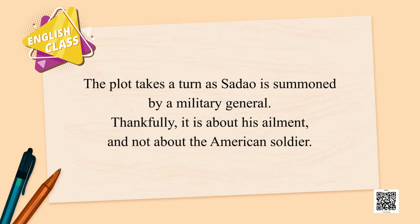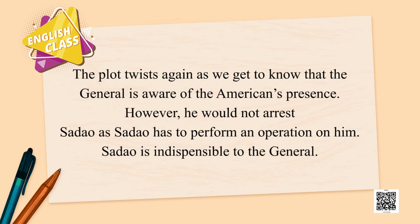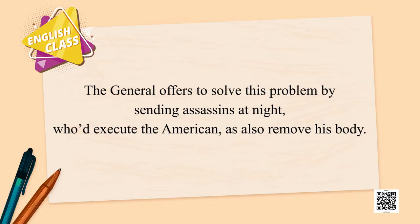The plot takes a turn as Sadao is summoned by a military general — thankfully about the general's ailment, not the American soldier. The plot twists again when we learn the general is actually aware of the American's presence; however, he will not arrest Sadao because Sadao must perform an operation on him. Sadao is indispensable to the general. The general offers to solve the problem by sending assassins at night to execute the American and remove his body. So Sadao and Hana want the soldier's well-being, but they cannot take on the Japanese military.